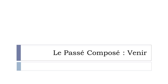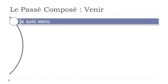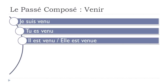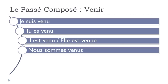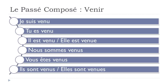Now the verb 'venir' (to come) at the passé composé — this one is a bit tricky. 'Je suis venu,' 'tu es venu,' 'il est venu,' 'elle est venue,' 'nous sommes venus,' 'vous êtes venus,' 'ils sont venus,' 'elles sont venues.' 'Venir' belongs to the group of verbs requiring 'être' instead of 'avoir.' For that reason, you must add E for the feminine singular, S for the plural, and ES for the feminine plural — though phonetically you always pronounce 'venu.'